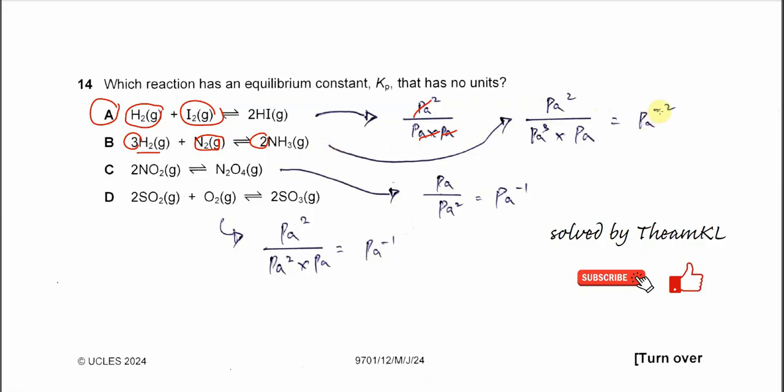For C, you get per Pascal because it's Pascal over Pascal squared—the partial pressure of N2O4 over the partial pressure of NO2 squared.